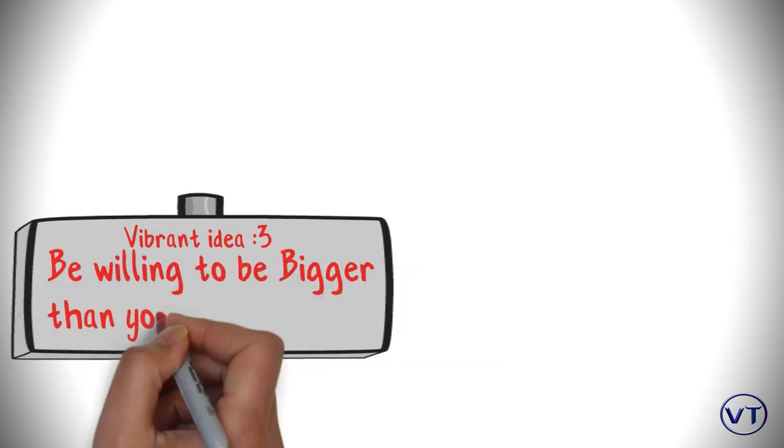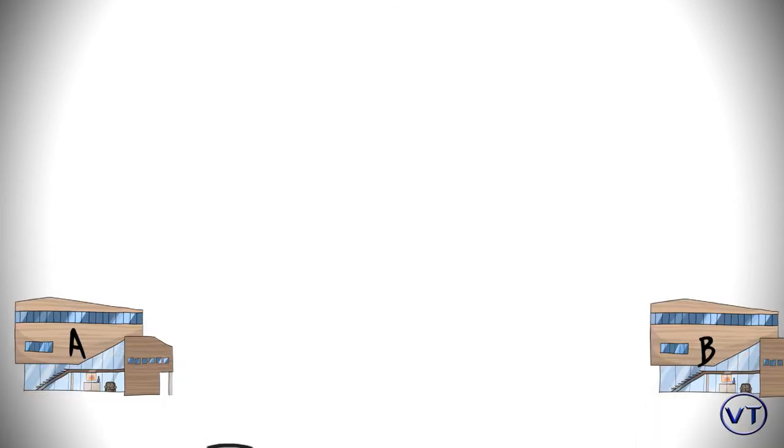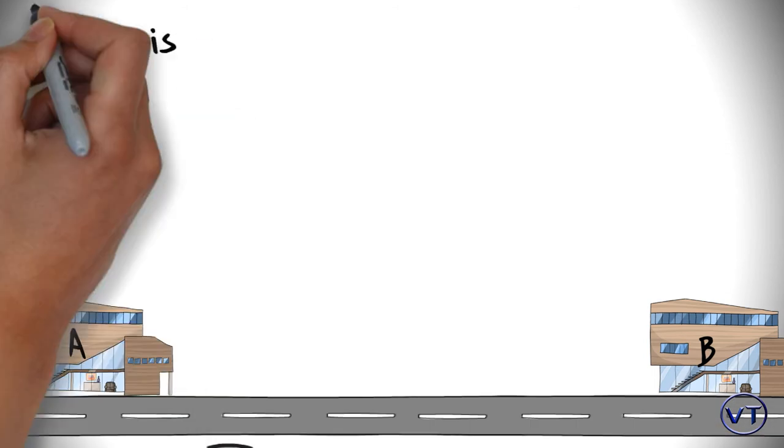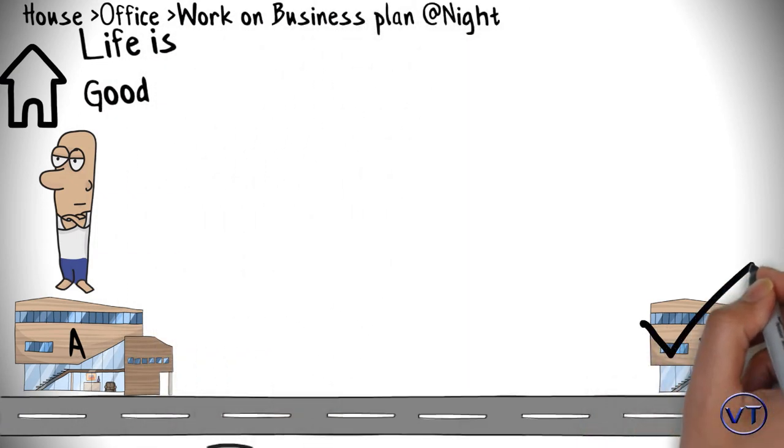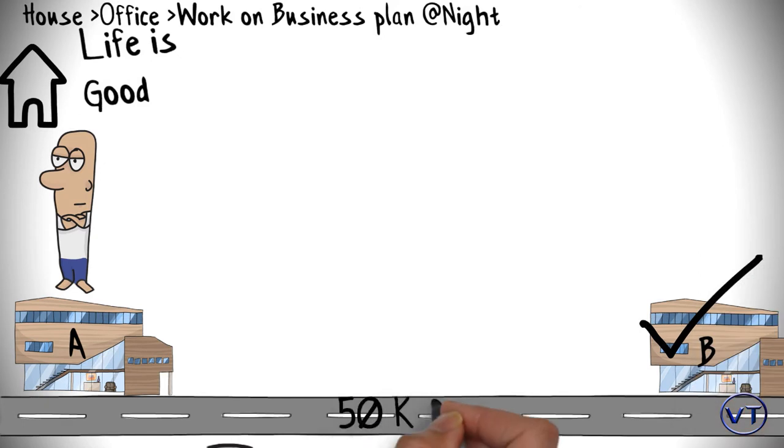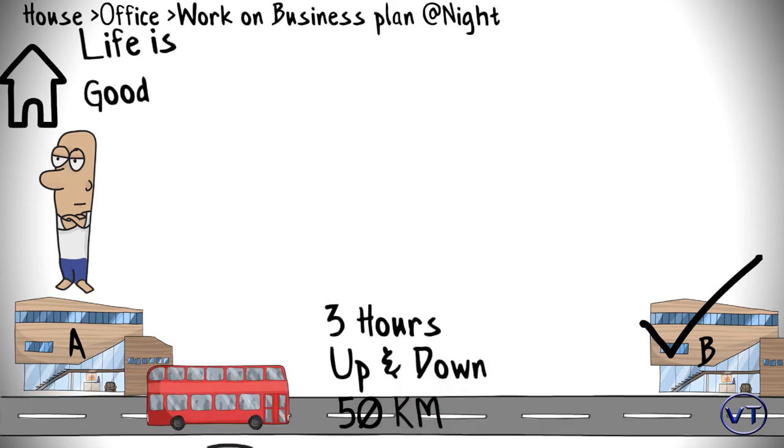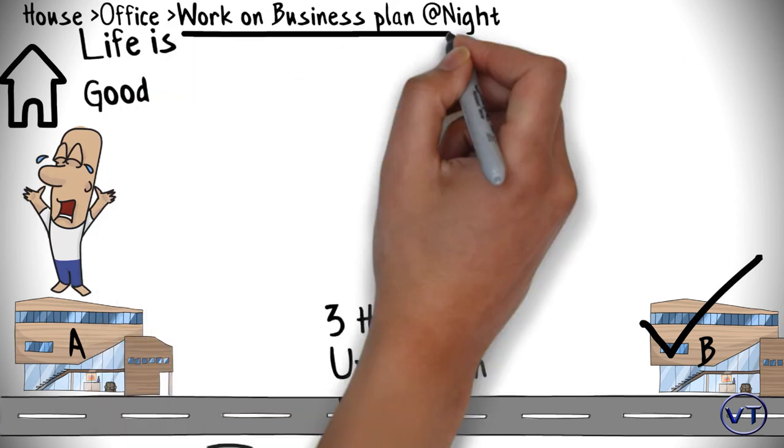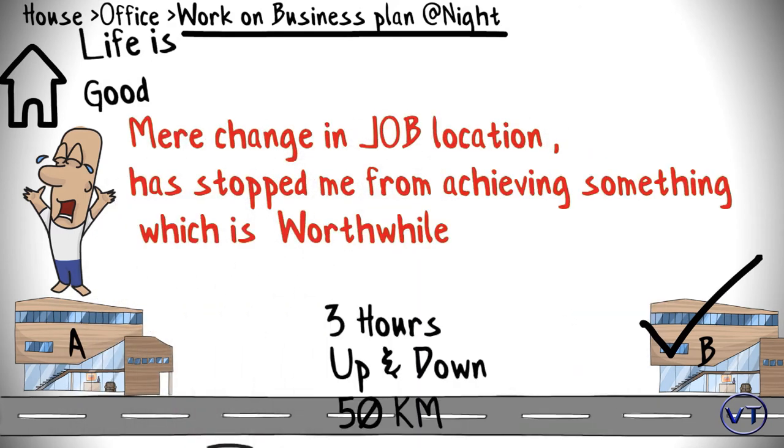The third vibrant idea is be willing to be bigger than your problem. I remember, our company has two offices at location A and B in a city. And I took the home near A. And life was going better. Go to office by walk, come back from office, work on my business plan in night hours. And suddenly, one day, company shifted me to location B, which was 50 km away from my home. And my life was screwed. My day's three hours used to get spent on travel. When I reached back home, I was frustrated. And this case has jeopardized my work on the business plan. What has happened here? Mere change in job location has stopped me from achieving something which was worthwhile for myself.